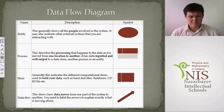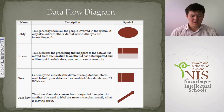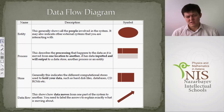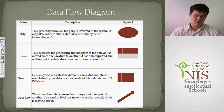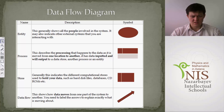The next element is process, which describes the processing that happens to data as it moves from one location to another — it has data inputted and will output the data to another process or entity. In the DFD the main element is process, and it can interact with any other elements. Any external entity should come first to a process and then go to another entity or process.